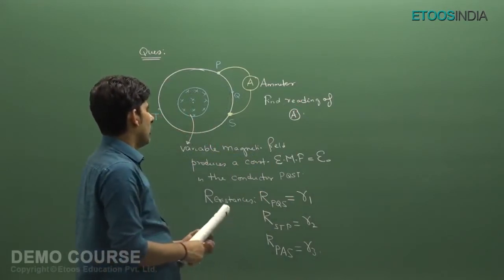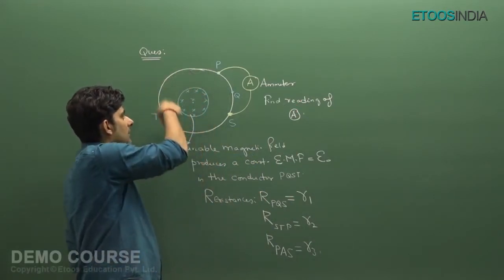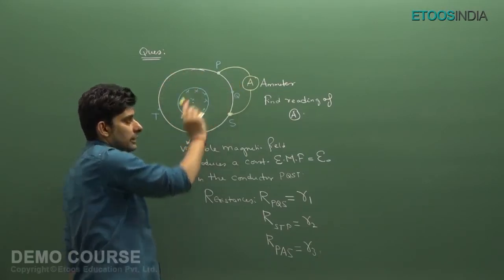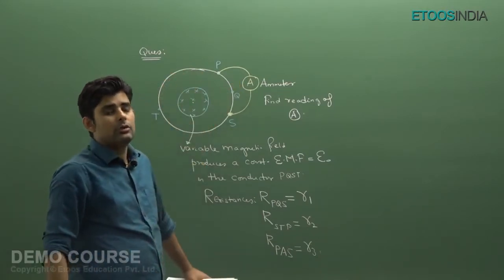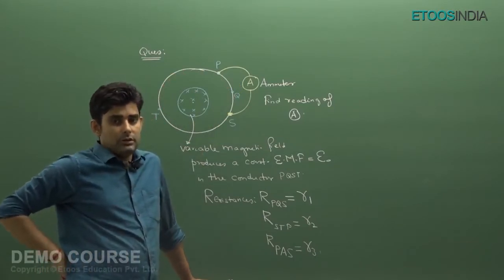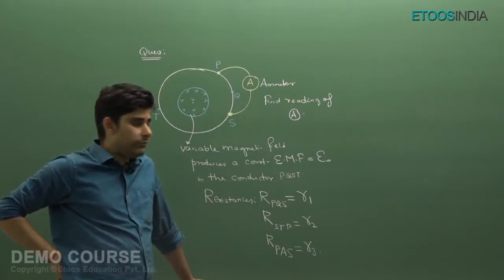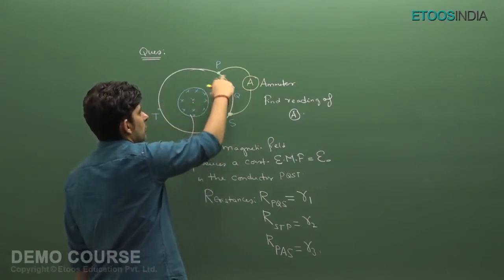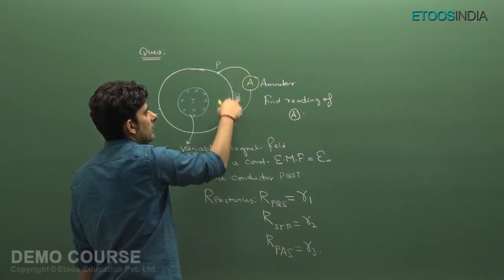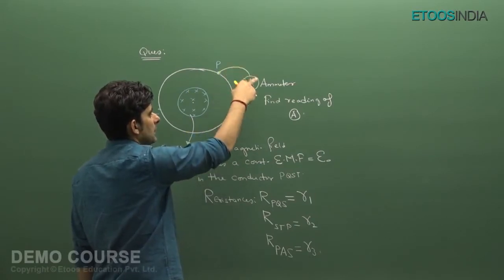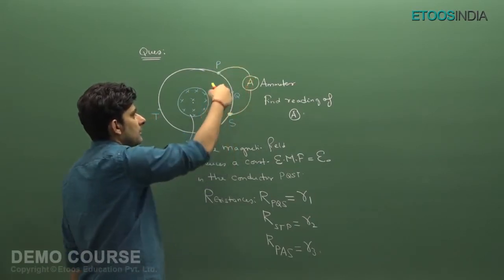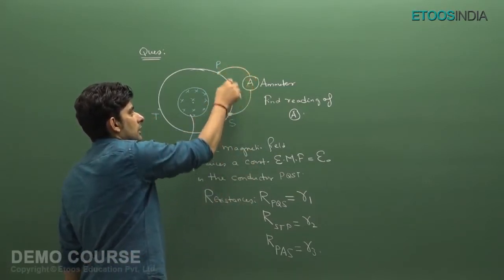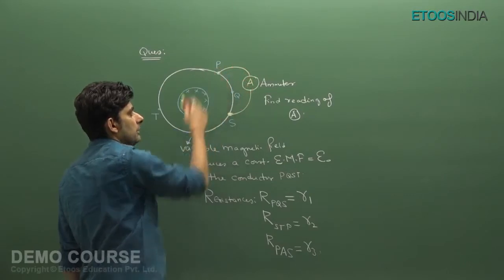Let us see how to solve this question. They have mentioned that in this part the magnetic field is present; there is no magnetic field in this part. We know that EMF induced in a loop only occurs when there is a change in flux. If you consider the loop PASQP, there is no field in this loop, so there is no flux, and the net EMF in portion PASQP will be 0.